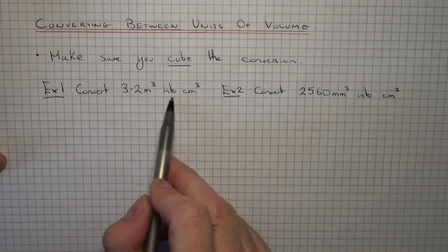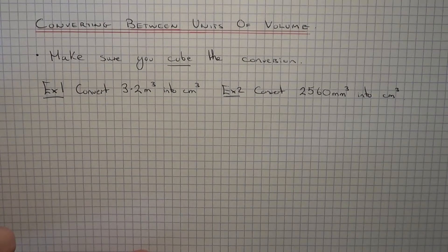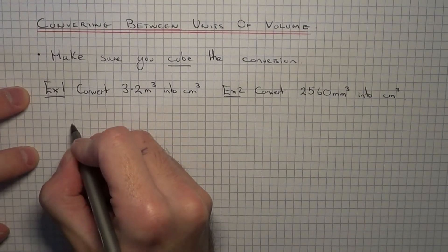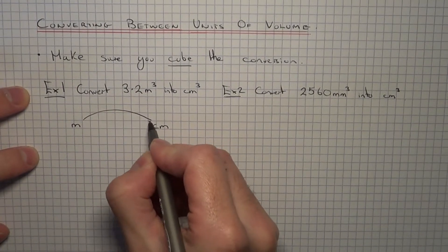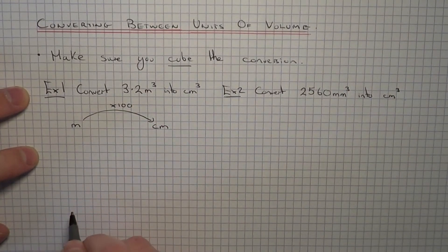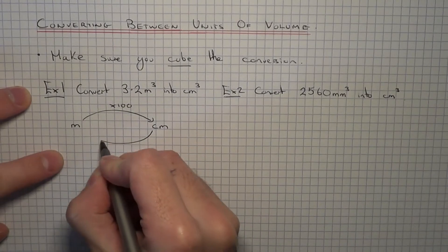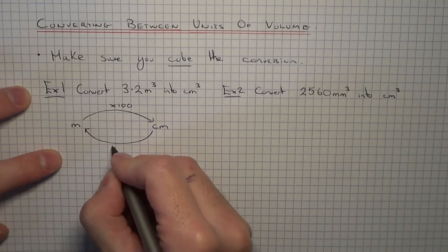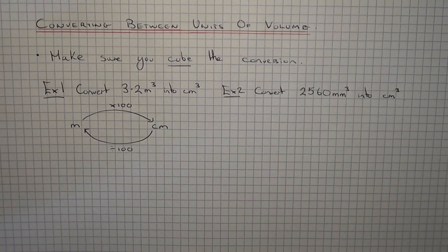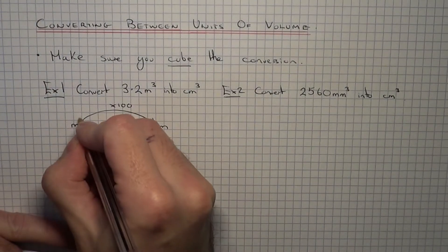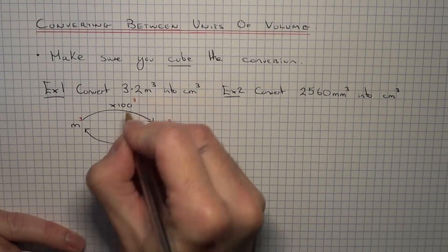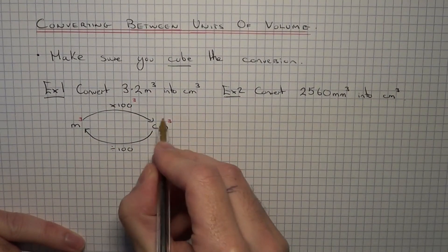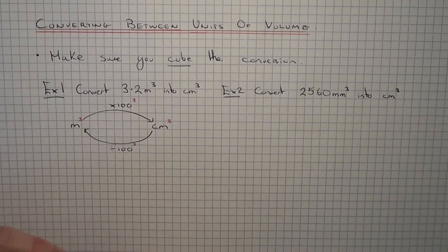We've got to convert 3.2 metres cubed into centimetres cubed. Normally, if you were to convert metres into centimetres, you would multiply by 100 because there's 100 centimetres in a metre. And going back from centimetres to metres, you would divide by 100. However, this is a cubic conversion, so to convert from metres cubed into centimetres cubed, you will have to multiply it by 100 cubed. And going back the other way, from centimetres cubed to metres cubed, you would divide by 100 cubed.